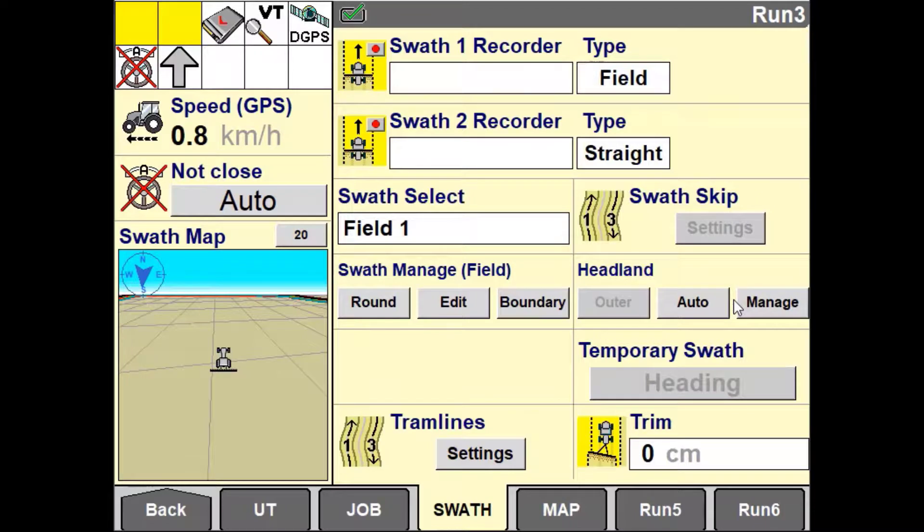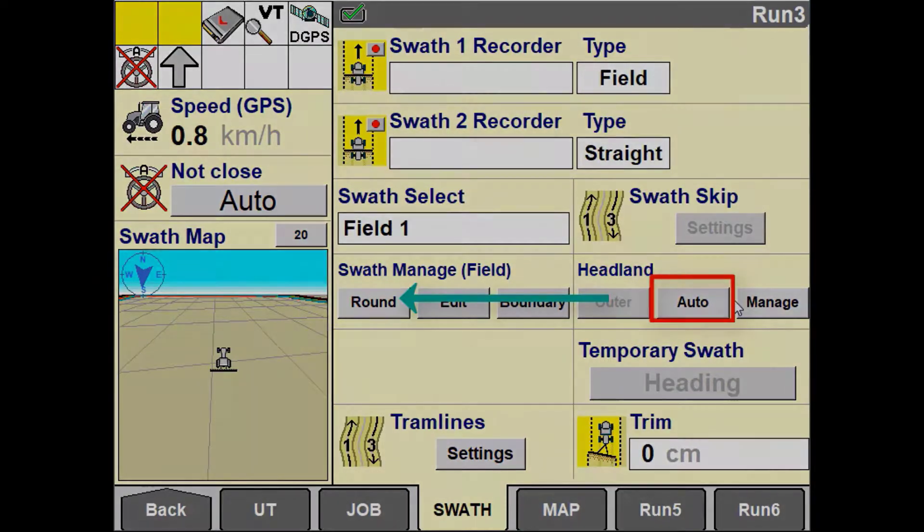If using auto guidance and the field swath is selected you will have the ability to choose the option auto or manual. Selecting auto mode will link the headland operations mode to the swath manager window. When interior is selected on the swath manager window the headlands operation mode automatically changes to inner. When either square headland or round headland is selected in the swath manager window the headland operation mode automatically changes to outer.